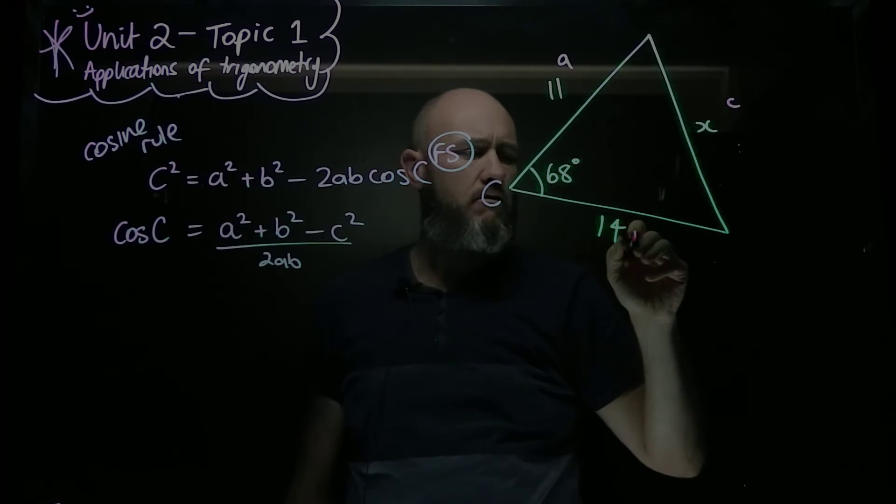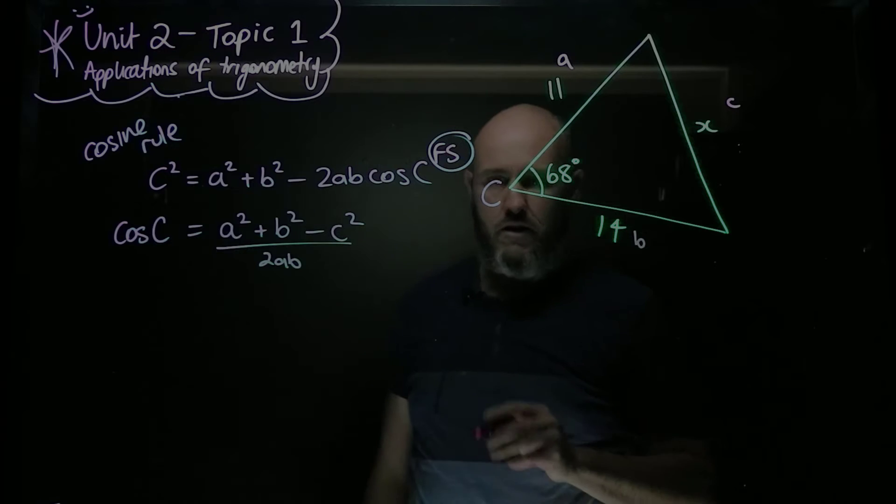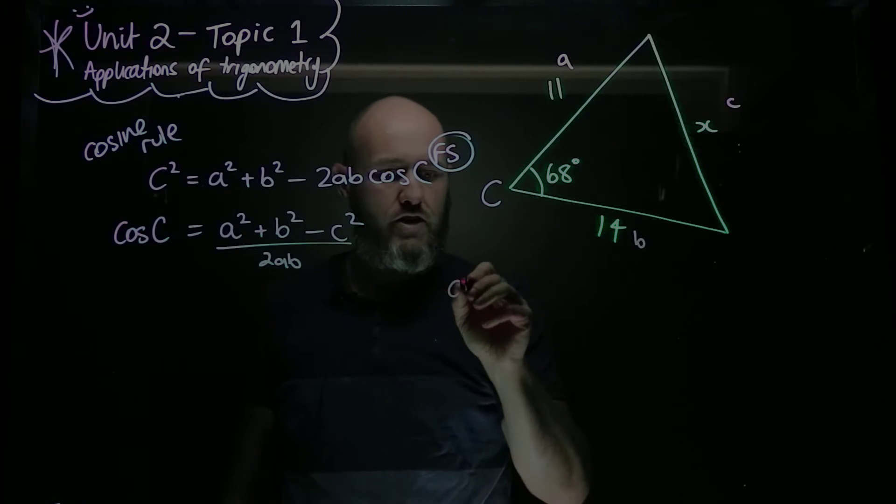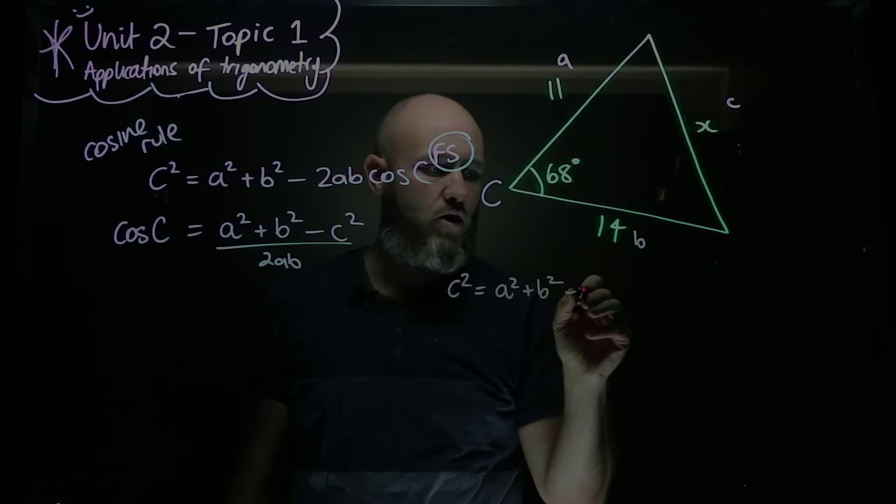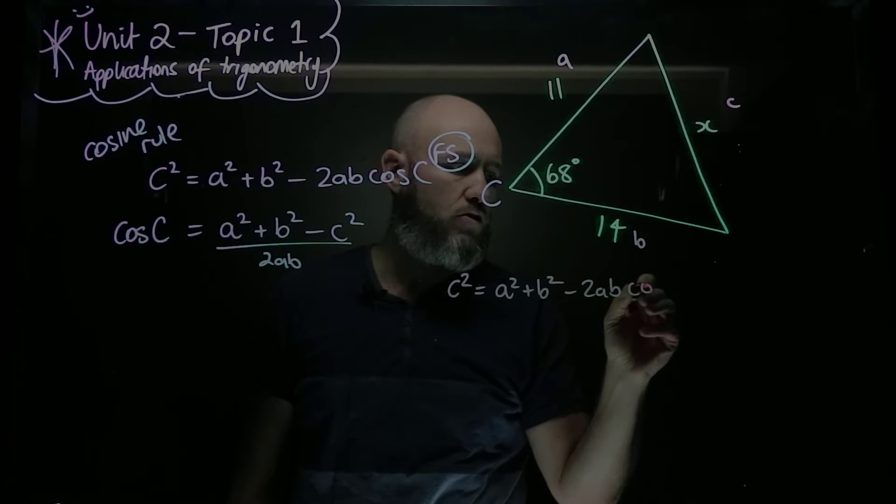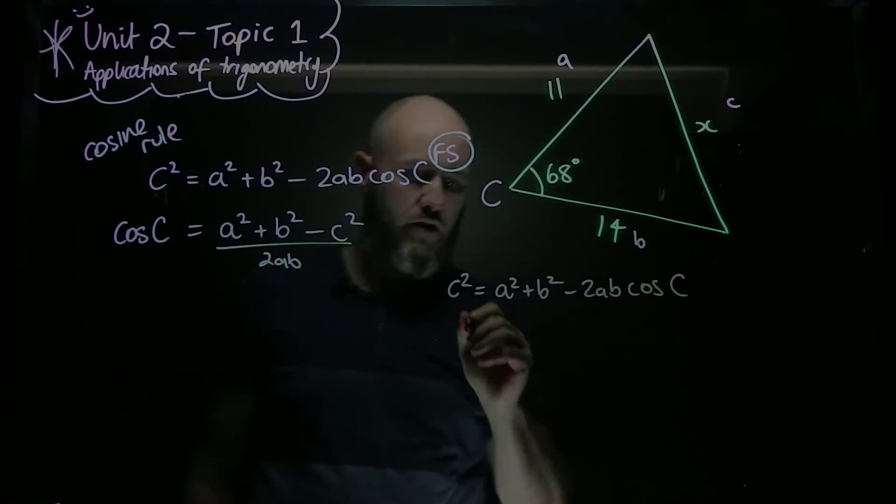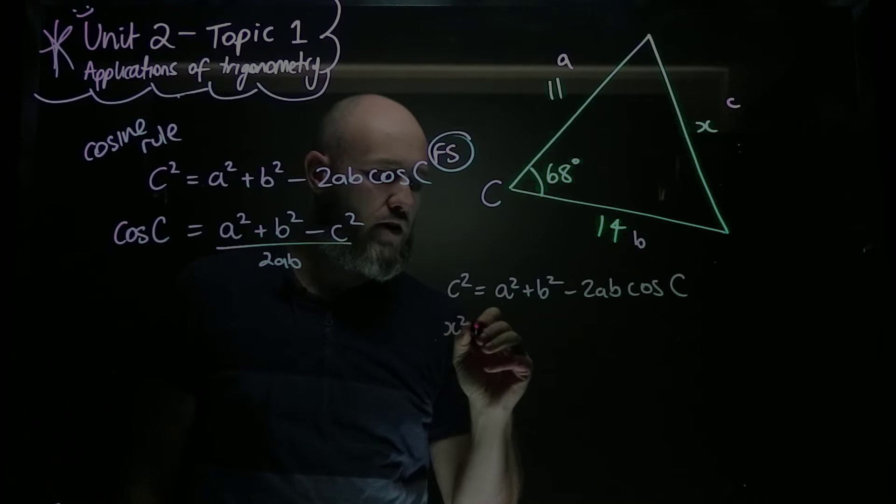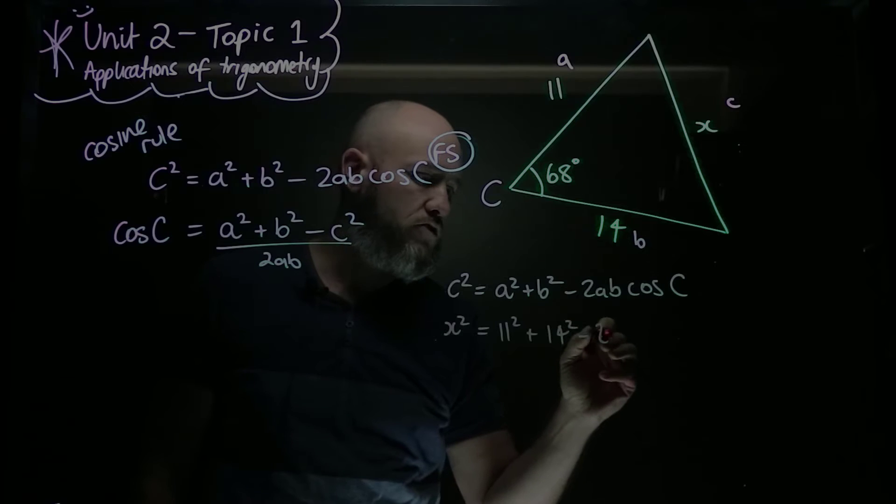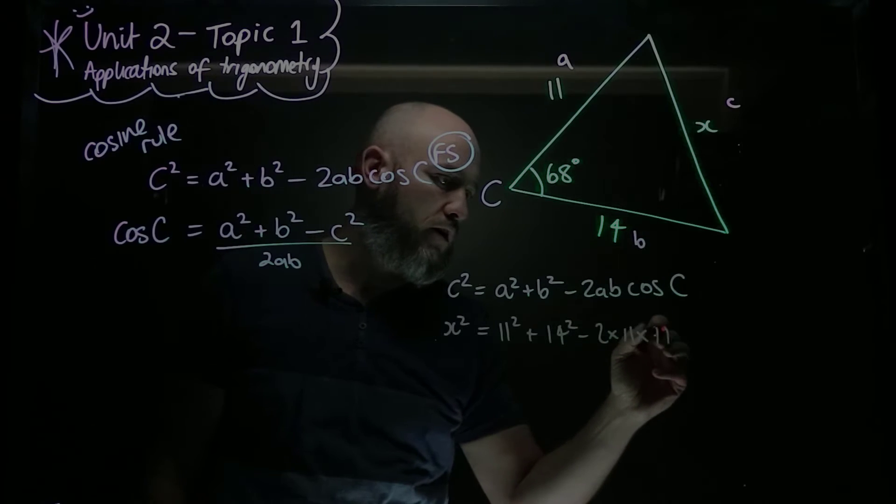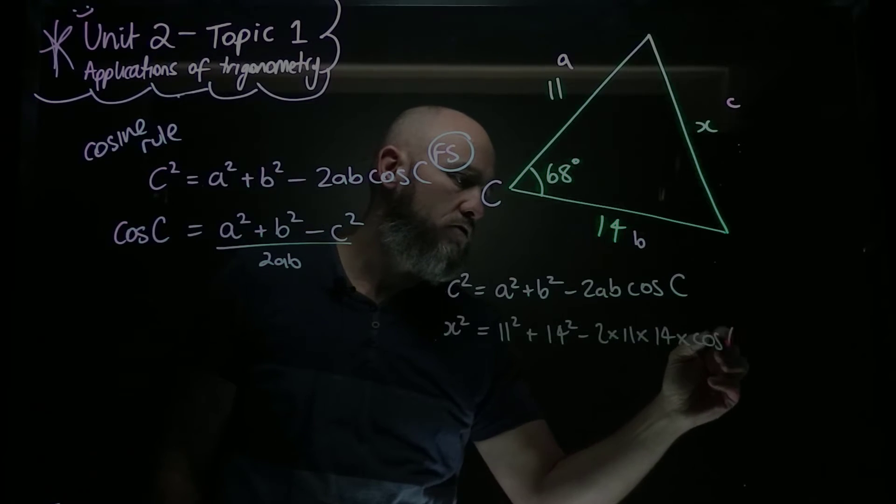So of course we get c squared is equal to a squared plus b squared minus 2ab cos C. So x squared is equal to 11 squared plus 14 squared minus 2 times 11 times 14 times cos 68.